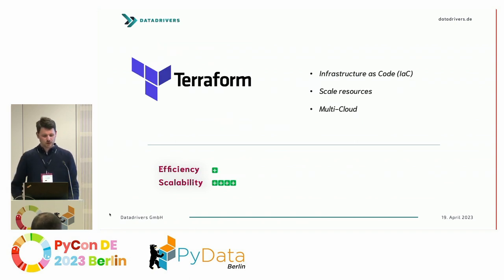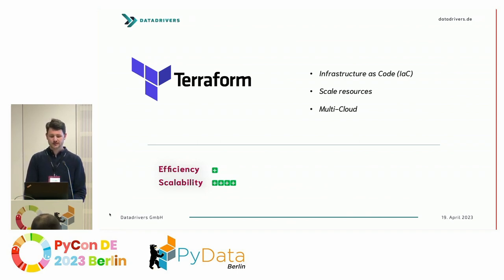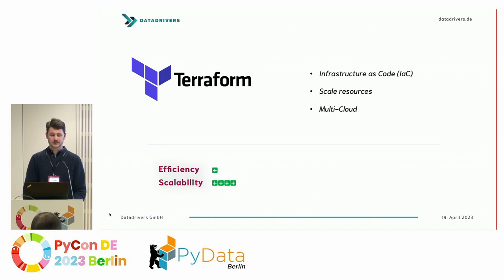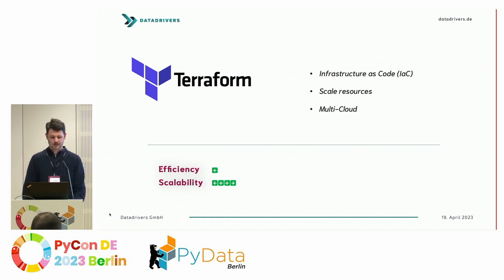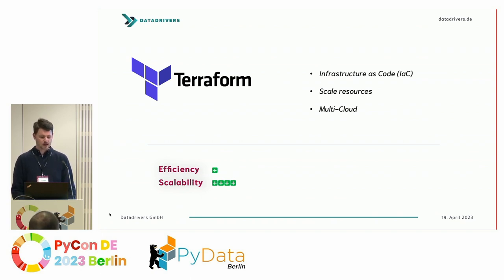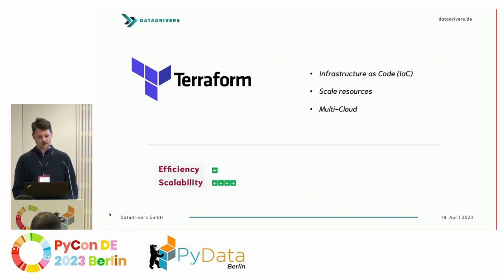Another tool we almost always use is Terraform. Terraform helps us to have our infrastructure as code and deploy it via Terraform. It allows us to scale resources and deploy in various cloud settings. It also helps against vendor lock-in. This doesn't contribute as much to efficiency — it makes things more complex — but it allows a lot more scalability in terms of adding resources or scaling out to different cloud environments.